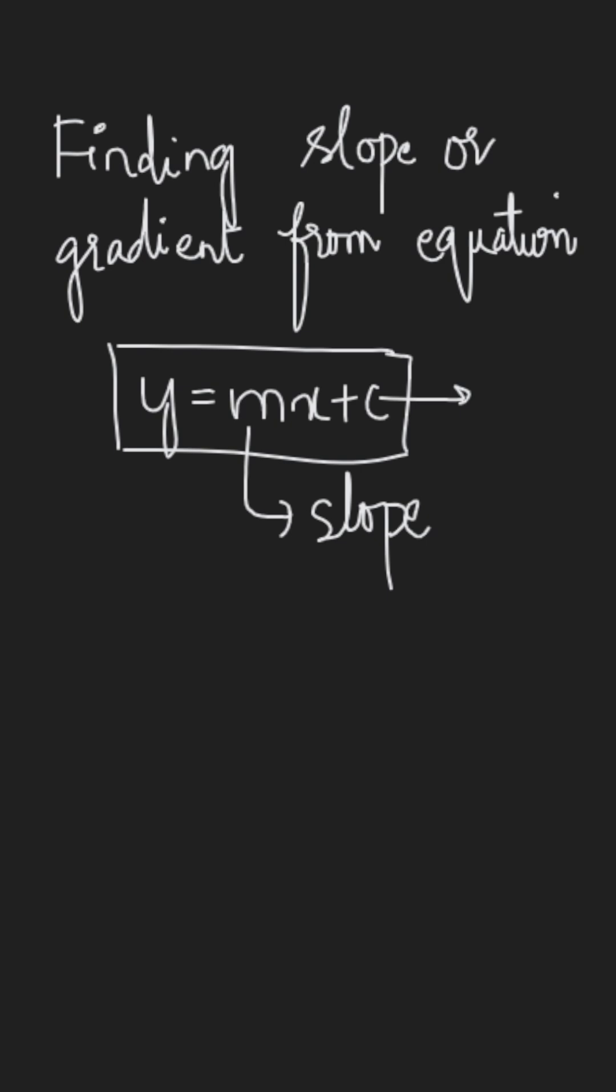For example, y equals 6x plus 3. Now clearly this equation is in this form, that is the gradient form, where the coefficient of x is 6. So here m equals 6, that is the slope equals 6.